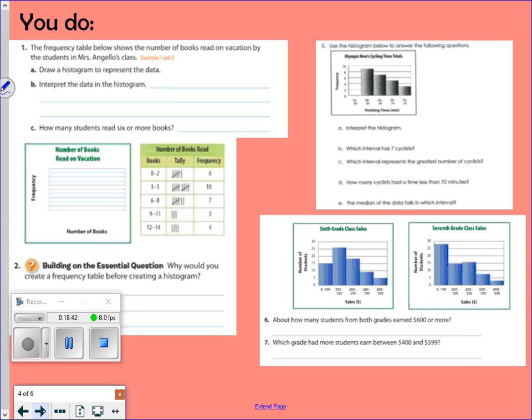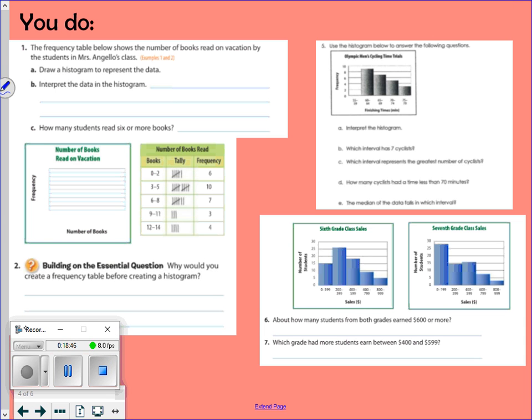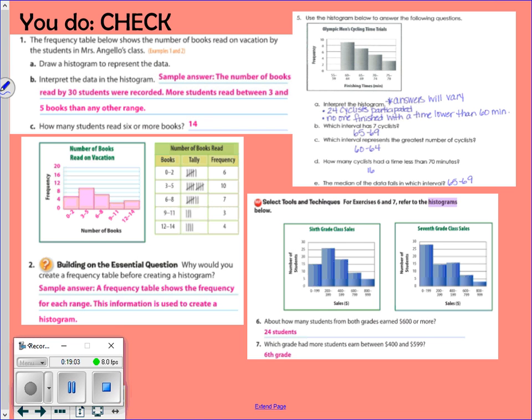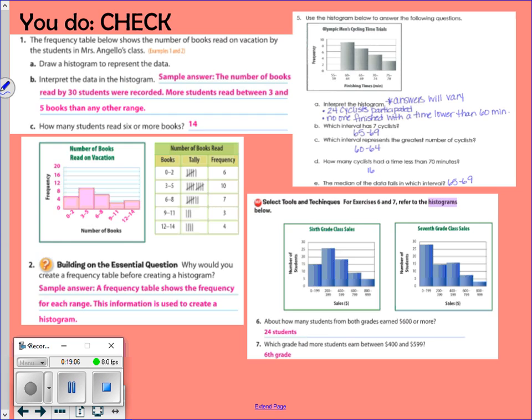So you're going to go on and continue to do some practice on your own. Again, if you can't see these, the class slides are uploaded on today's Thursday module. You're going to answer these questions, and then pause, and then play when you're ready to check. And here are those answers. Again, pause, play when you're ready. Tonight there is no homework. This is a family night, but do be prepared. We're going to do an activity in class tomorrow that we're going to take as Minor 1.2. What might be on that is median, mode, and range. There might be dot plots, stem and leaf plots, these histograms. It's not going to be anything too crazy, but some of that stuff might be on there. Y'all have a good night, and thank you.